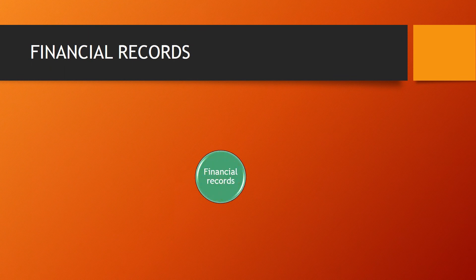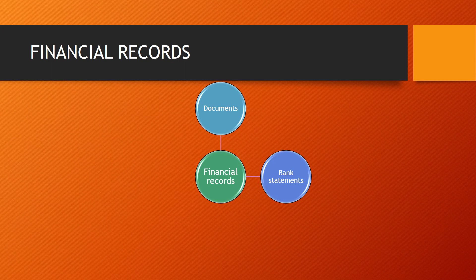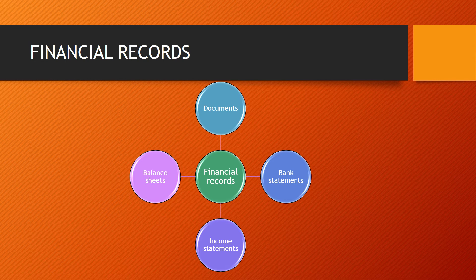Financial records give a formal account of different financial activities of a business. There are four different types of financial records. The first are documents such as contracts, receipts, and checks. The second is bank statements, which come from the bank. The third is income statements, calculated using the business's profits. The fourth are balance sheets, which show how much a business is worth. Business owners must keep accurate and up-to-date financial records so they can plan properly, and most businesses would use a person called a bookkeeper.